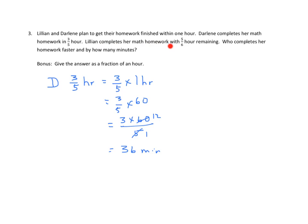Lillian's a little bit different here because she doesn't get it done in five-sixths of an hour. She gets it with five-sixths of an hour remaining. So we want to take Lillian here. She had a whole hour. And she had five-sixths remaining. So she has done her homework in one-sixth of an hour. So again, one-sixth of an hour equals one-sixth times one hour equals one-sixth times sixty minutes. And that is one times sixty over six. And she has it done in ten minutes. So who has it done faster? Lillian does. And we want to know by how many minutes. Well, we simply subtract Darlene's from Lillian's. And she gets it done twenty-six minutes quicker.